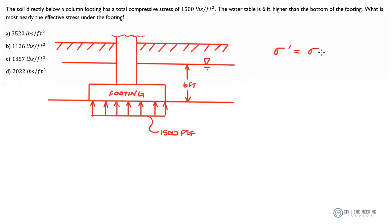Sigma prime, the effective stress, equals the total stress, sigma, minus u, which is the pore water pressure. And u, if you'll remember, equals the depth of the water, or the pressure head sometimes it's called, times the unit weight of water, gamma sub w. That's what the pore water pressure is.